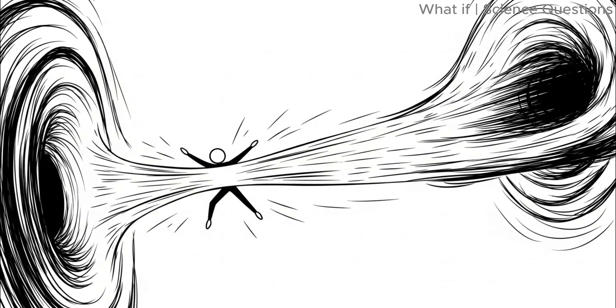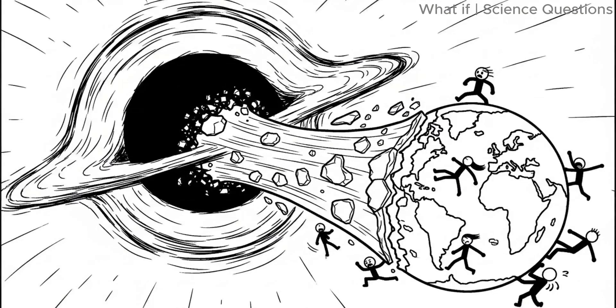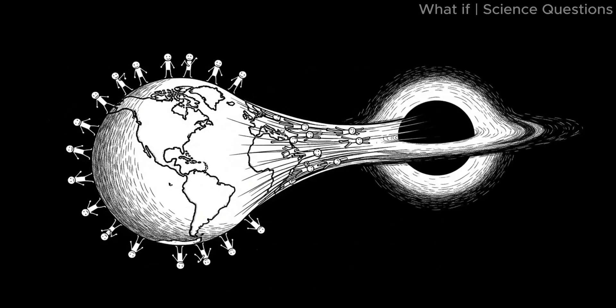Scenario two, direct impact. If the black hole came too close, within just tens of thousands of kilometers, there would be no escape. Earth would be torn apart by tidal forces, the same phenomenon that causes ocean tides, but on a scale beyond imagination. The side of Earth facing the black hole would experience a stronger pull than the far side, literally stretching the planet.